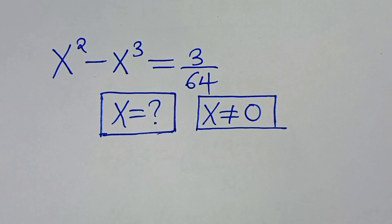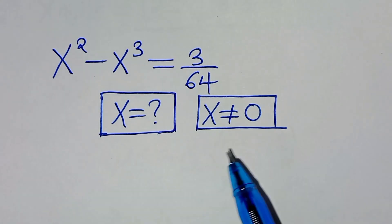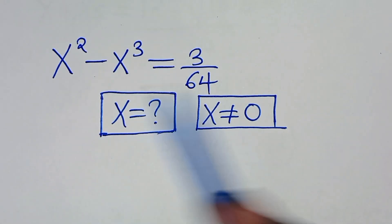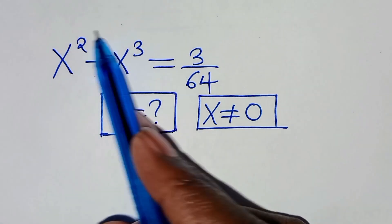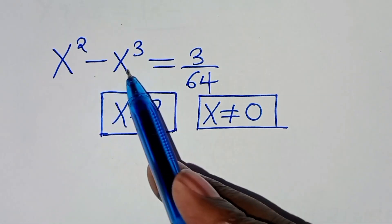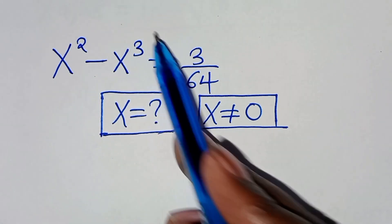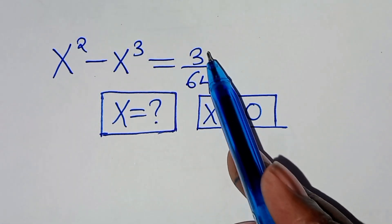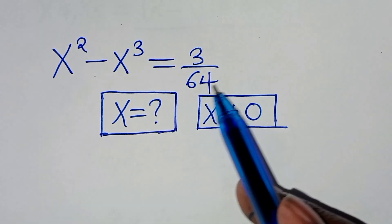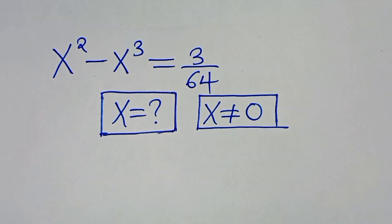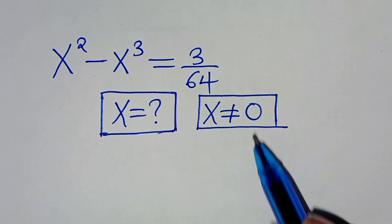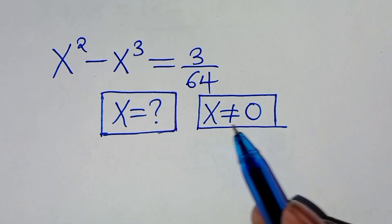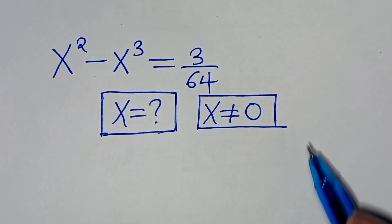Hello everyone, you are welcome to solve this nice algebra problem, which is x to the power of 2 minus x to the power of 3, this is equal to 3 over 64. So, what are the values of x, given that x is not equal to 0?